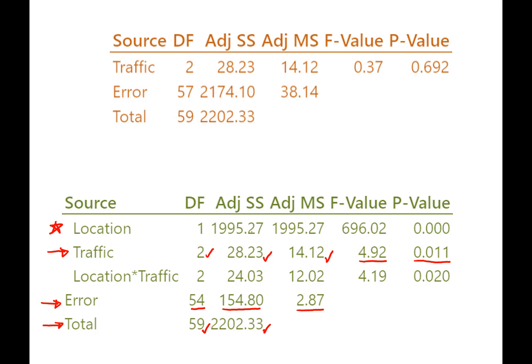And you know, if we look at the interaction term, which we'll tell you more what that means in the next video, but we can see that there are two degrees of freedom and some of the spread about 24 sum of squares are attributable to the interaction term. So that is going to start explaining why you can imagine these terms by error are different. Error is just going to be the total minus the terms that are attributable to location, traffic, and the interaction term. So 59 minus 5 is 54. 2202 minus 1995, 28, and 24 equals 154.